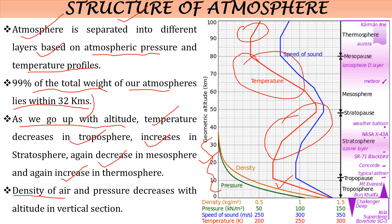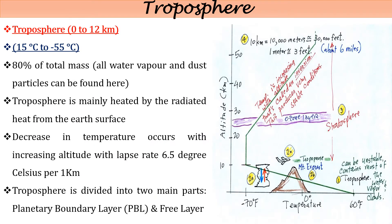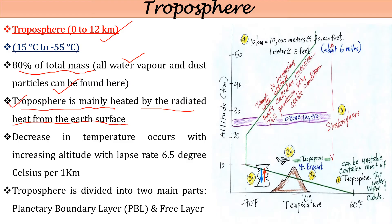The density of air and pressure decreases with altitude in the vertical section of the atmosphere. The first layer, the troposphere, lies between 0 to 12 kilometers, with temperature ranging from 15 degrees Celsius to minus 55 degrees Celsius. 80% of the total atmospheric mass, containing all kinds of water vapor and dust particles, is found here. The troposphere is mainly heated by radiative energy from the Earth's surface — the long-wave radiation generated by the surface and radiated back to the atmosphere.